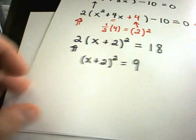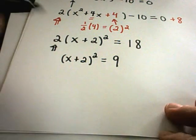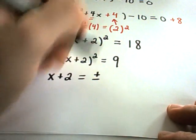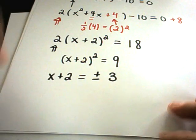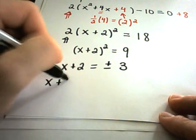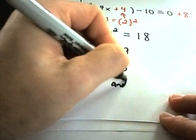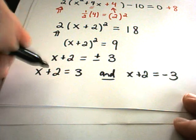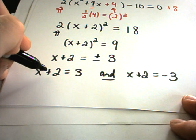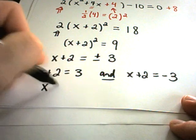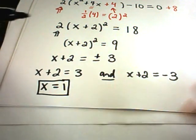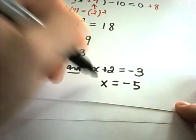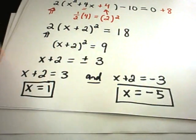Now take the square root of both sides. The square root of x plus 2 squared is just x plus 2. The square root of 9, remembering plus or minus, gives plus or minus 3. This gives two equations: x plus 2 equals positive 3, so x equals 1; and x plus 2 equals negative 3, so x equals negative 3 minus 2, which is negative 5. Those are our two solutions.